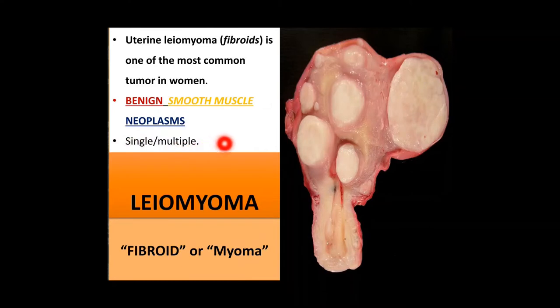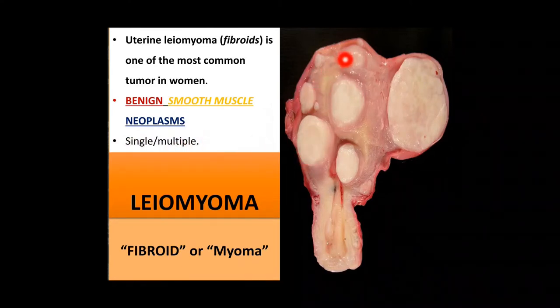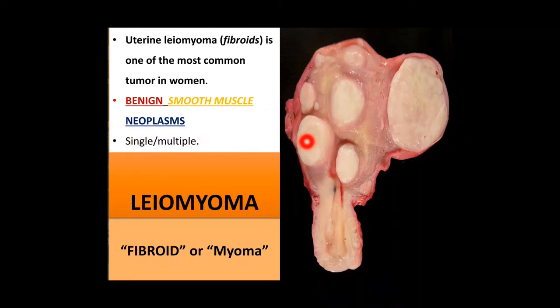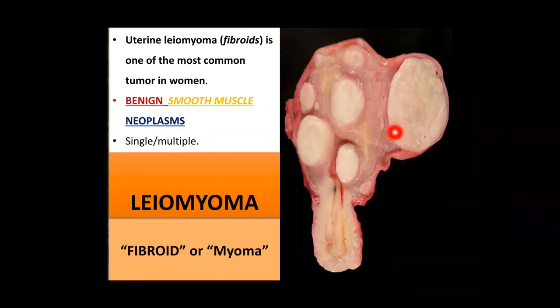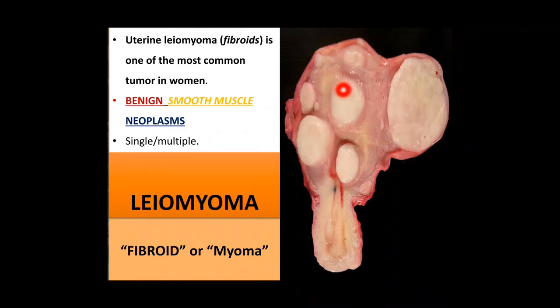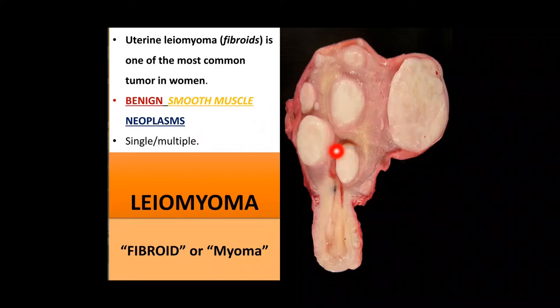Leiomyomas can be either single or multiple. In this picture of a longitudinal section of a uterus cut open, you can see multiple leiomyomas — they are even filling and compressing the endometrial cavity.